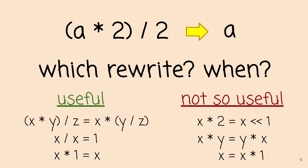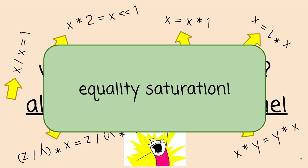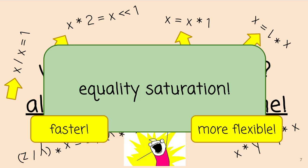And what equality saturation has to say about this is you should use all of the rewrites simultaneously all of the time. Now, it sounds really expensive, but equality saturation is a really cool technique that uses the e-graph data structure that allows you to do this effectively. And what we're doing in this work is making that faster and more flexible.